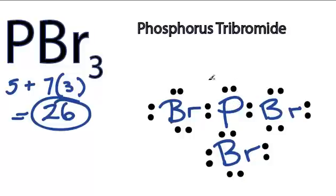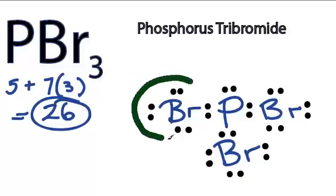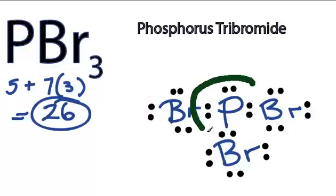At this point, everything has 8 valence electrons. The bromines, they're all the same. They have 8. And the phosphorus in the center, it has 8. So we've filled the octets for everything.